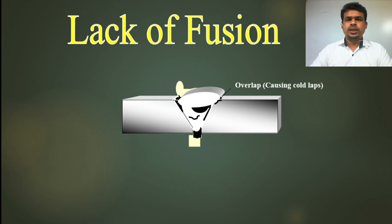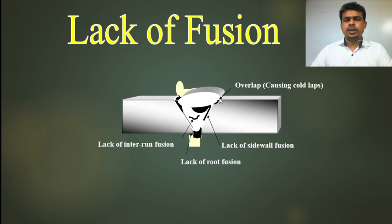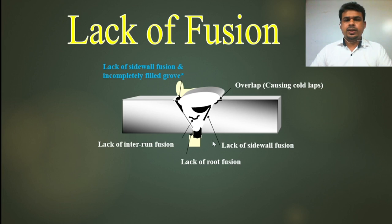You can see here the overlap causing cold lap — this is called overlap. Another type is lack of sidewall fusion, where the parent metal and weld metal are not fused properly at the sidewall. Then there is lack of root fusion at the root side, where the metal is not melted properly. Lack of internal fusion refers to one layer not being fused properly to another layer, one pass to another pass.